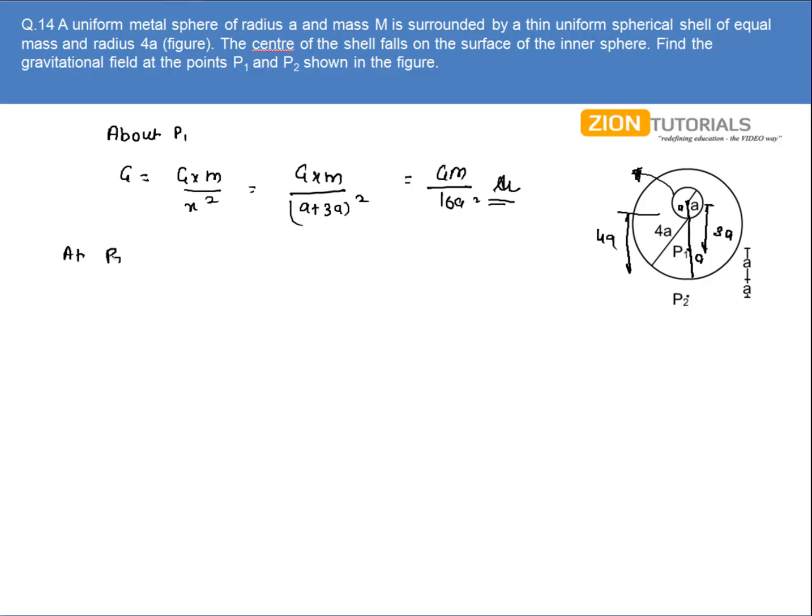Now if I talk about P2, then the gravitational field will be due to the metallic sphere as well as the hollow sphere. And of course it will be along the central line, so I can directly add them.